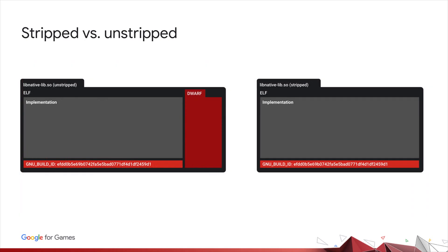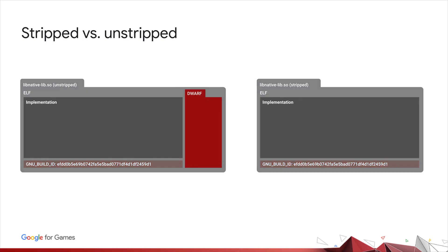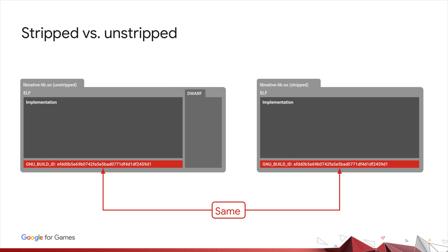The on-device unwinder reads the debug information that ships with the system libraries on Android — this debug information is known as DWARF. When we talk about stripped libraries, we're usually referring to a version of the library that does not have the DWARF data. By default, the Android build process will automatically strip all binaries before packaging them into the APK. The major difference between a stripped and unstripped library is the presence of DWARF data. The GNU build ID — a unique hash that identifies a particular build of a library — is the same in both versions. This is a critical trait in linking information to a particular build of a binary. Crashlytics uses this ID to associate symbol files to their respective binaries.